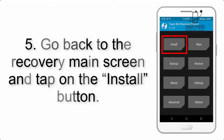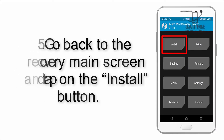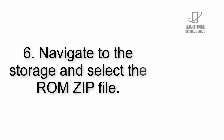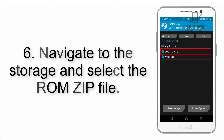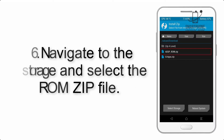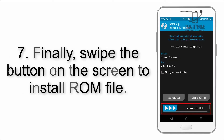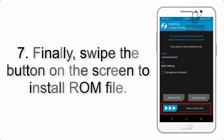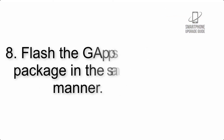Step 5: Go back to the recovery main screen and tap on the Install button. Step 6: Navigate to the storage and select the ROM zip file. Step 7: Finally, swipe the button on the screen to install the ROM file.